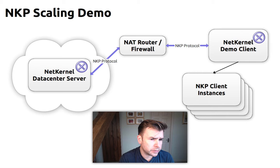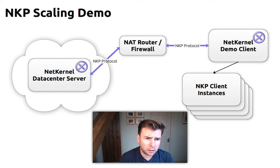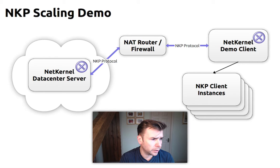To give a quick run through of the architecture of this demo: we have a NetKernel instance running on a data center in Amsterdam using DigitalOcean — a very small instance with only 512MB of RAM. Connecting to that we have a NetKernel client running on a laptop here, going through a NAT router and firewall connecting over the internet to the data center.